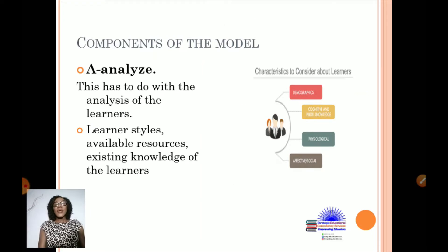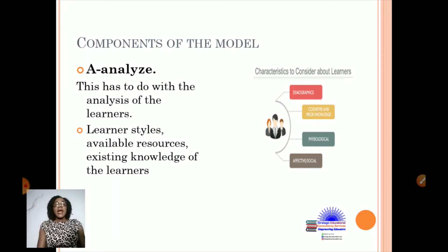What are the components of the model? It is a five-step model. The first step is to Analyze. This involves the analysis of the learners, their learning styles, available resources, and the existing knowledge of the learners — all of which become crucial as you utilize this model to plan for your learners.